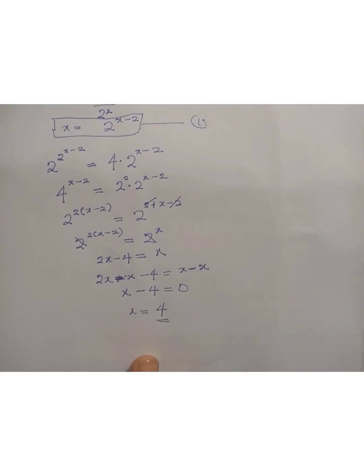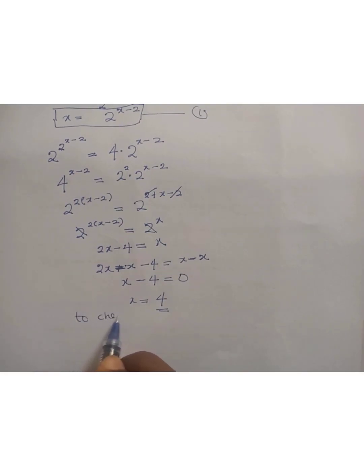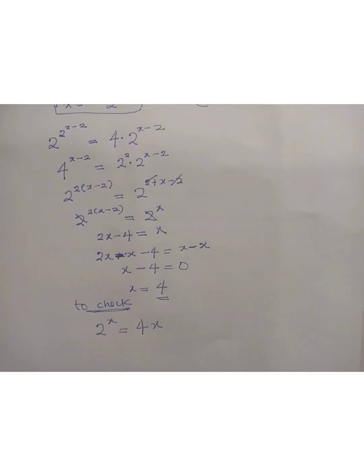To verify, the given equation is 2^x = 4x. Let's input the value of x = 4: 2^4 = 4 · 4. Since 2^4 = 16 and 4 · 4 = 16, we have 16 = 16, which confirms our solution. Thank you for watching.